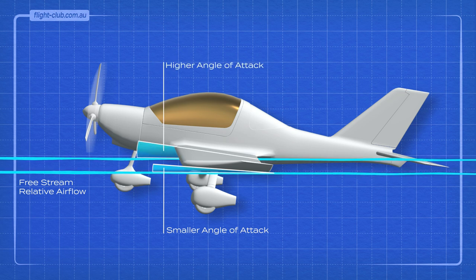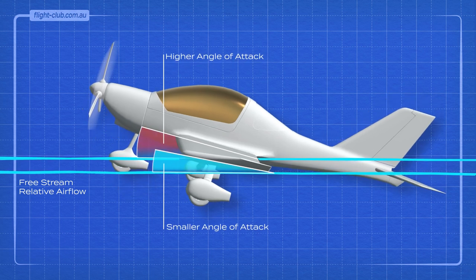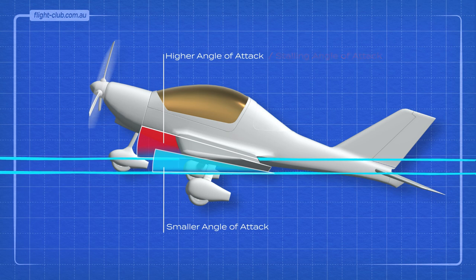Consequently, more lift is generated by the inner part of the wing, while less lift is generated at the wing tips. At high angle of attack, the wing root section of the wing reaches the stalling angle of attack prior to the wing tip.